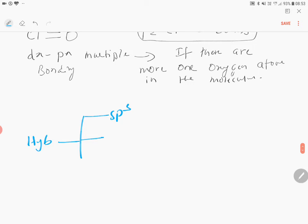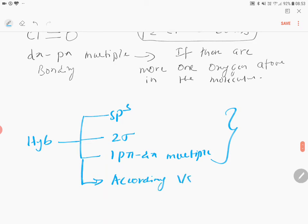There are two sigma bonds, one p-pi d-pi multiple bond. Two sigma bonds. If these are the conditions according to VSEPR, the shape of the molecule should be bent or angular.